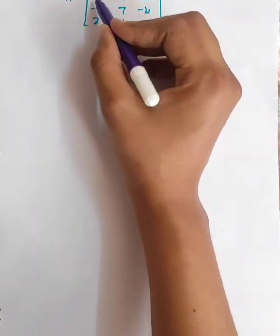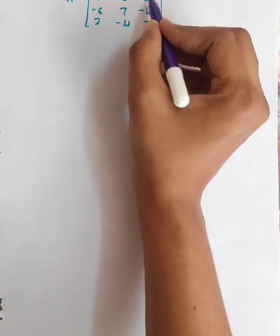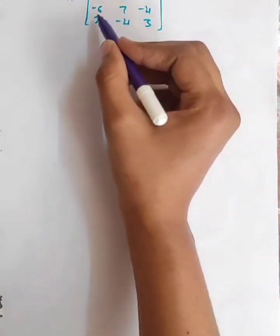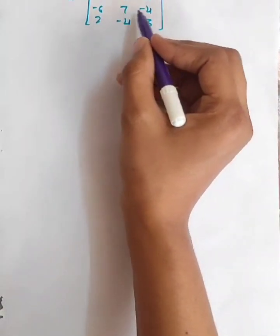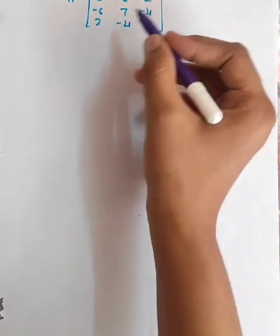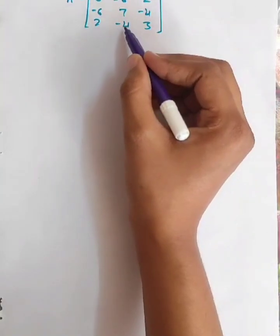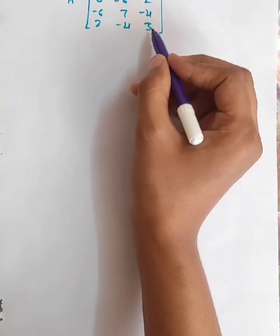The matrix is: 8, minus 6, 2; minus 6, 7, minus 4; 2, minus 4, 3.